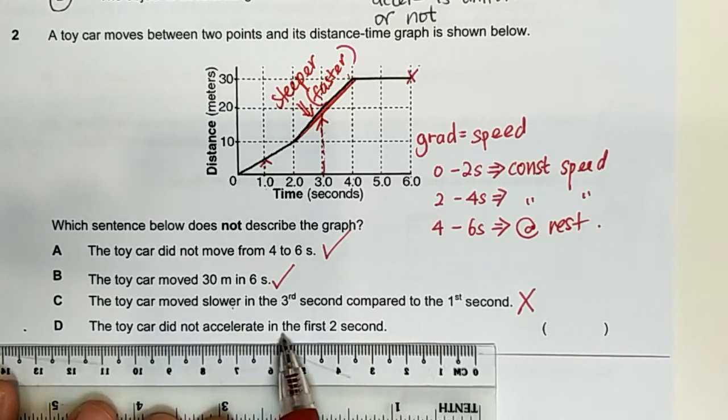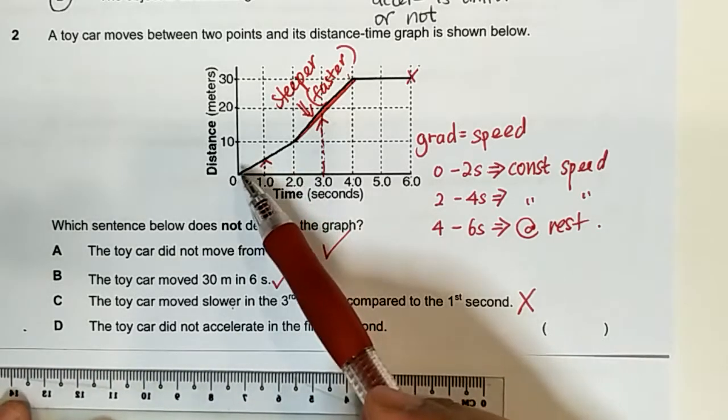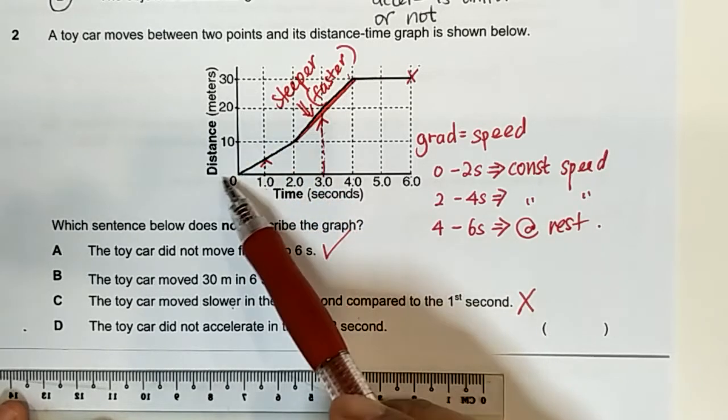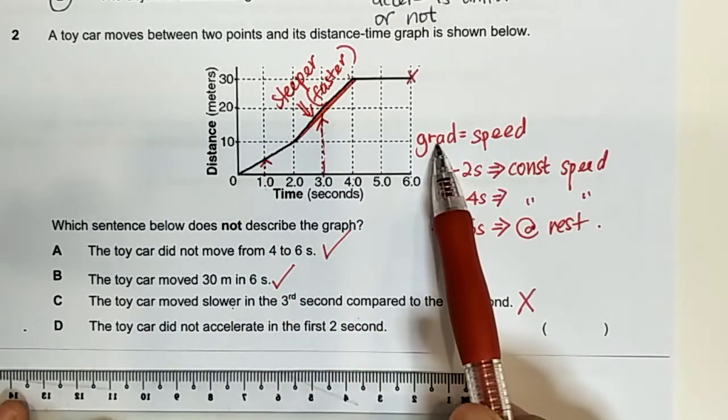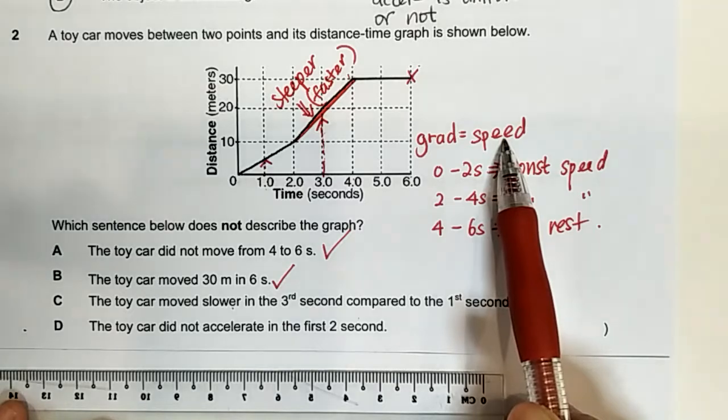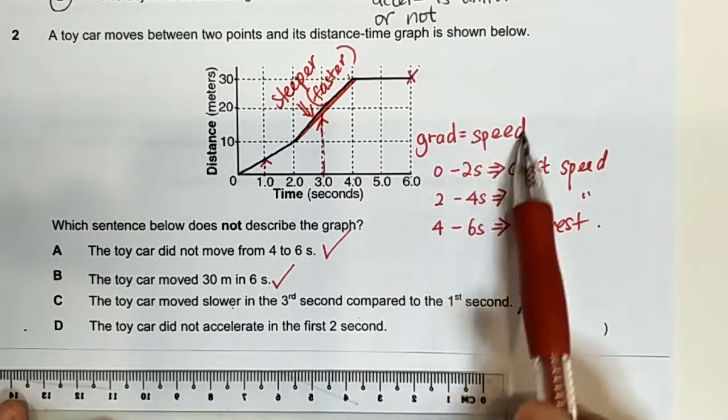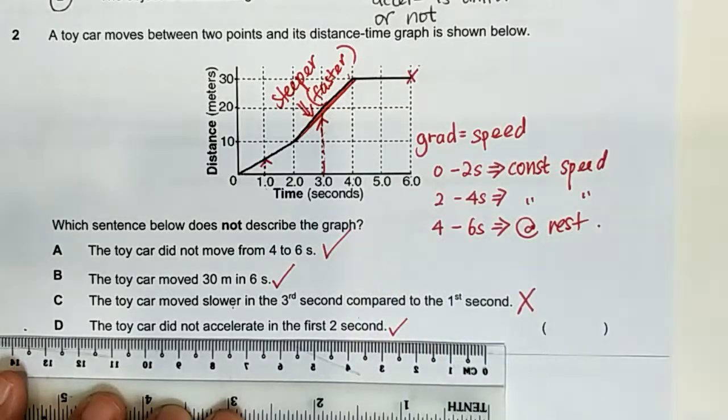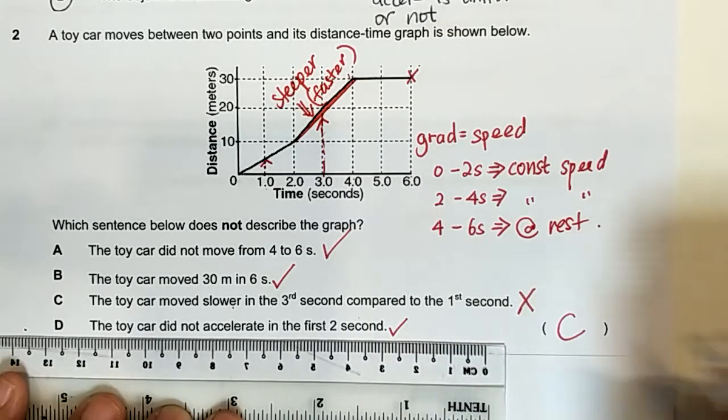And the last one, the toy car did not accelerate in the first two seconds. The first two seconds as you can see it is a constant gradient, so when the gradient is constant the speed is constant. So when the speed does not change there is no acceleration, so it is true it did not accelerate. So in this case C is the answer.